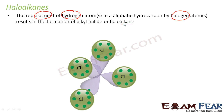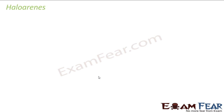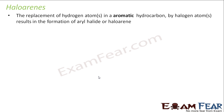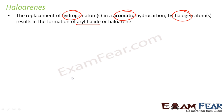Please note: haloalkanes are all sp3 hybridized. The carbon atom linked to the halogen has four bonds, making it sp3 hybridized. For haloarenes — replacing hydrogen in any aromatic compound with a halogen gives you a haloarene, also called an aryl halide. So the earlier examples were alkyl halides or haloalkanes, and these aromatic ones are haloarenes or aryl halides.